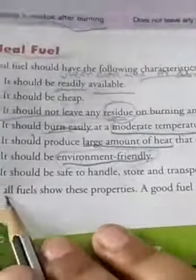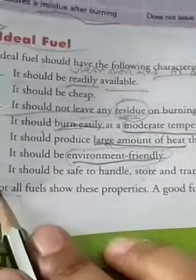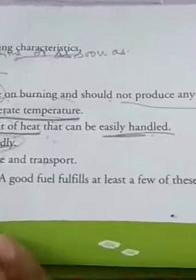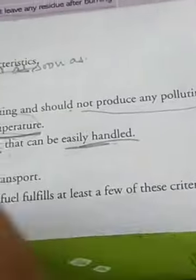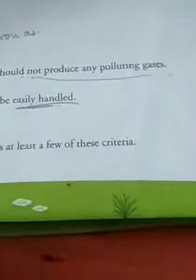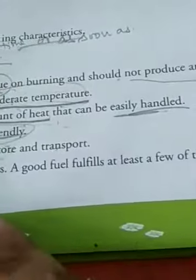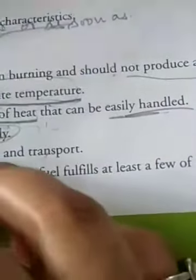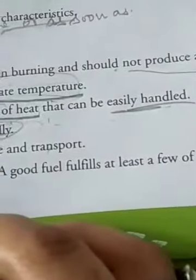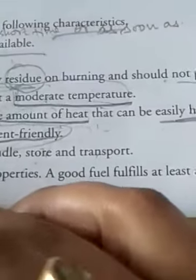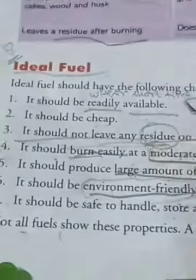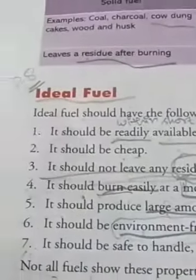Not all fuels show these properties. A good fuel should fulfill at least a few of these criteria. Here we have seen seven properties. An ideal fuel follows all the criteria, but a good fuel should follow the maximum number of these features — maybe four or five — and we can call it a good or ideal fuel.